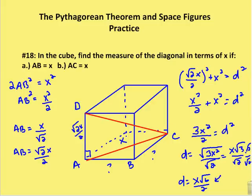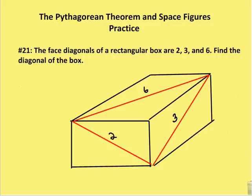Last problem, and this is actually a very short problem. The face diagonals of a rectangular box are 2, 3, and 6. Find the diagonal of the box. I have 2, 3, and 6, and I want to find the diagonal of the box, so it would be the length from this edge here to this edge. That would be one of the true diagonals, not a face diagonal of the box.